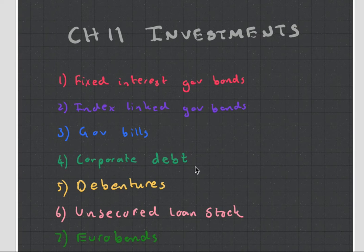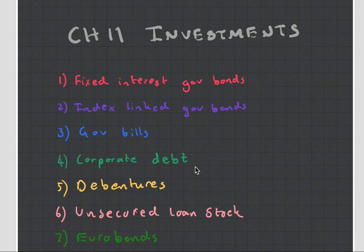Number one: fixed interest government bonds. This is where a government wants to raise money, so you give the government money, and in return they give you a fixed interest coupon at various intervals — as a thank you for lending them money — and then you get your money back at some certain date. They could also link that to some sort of index to give you some type of protection against inflation, which is very useful when your bond is very long term.